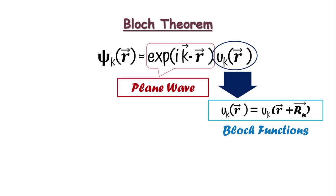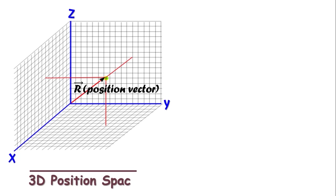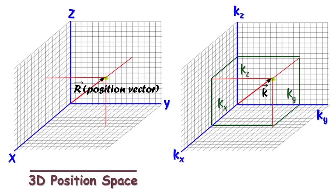Now, this wave vector k has a specific relation with momentum p equals to h cross k. Just as the position vector r has three components x, y, and z in real 3D space, k also has three components kx, ky, and kz, and the space defined by them is called momentum space or reciprocal space.